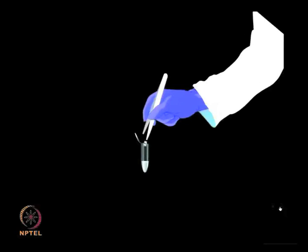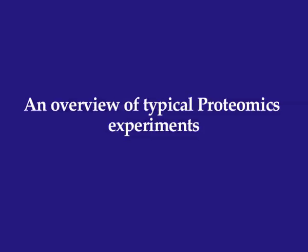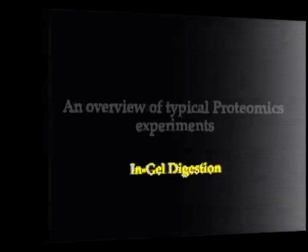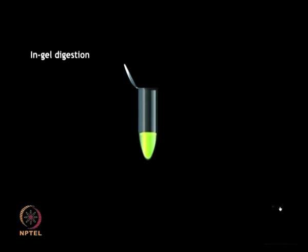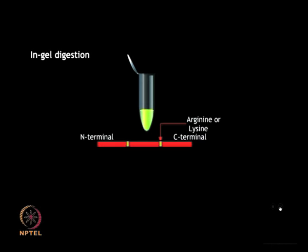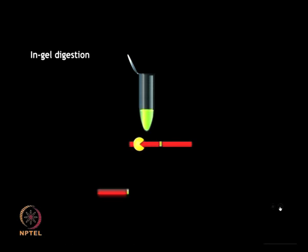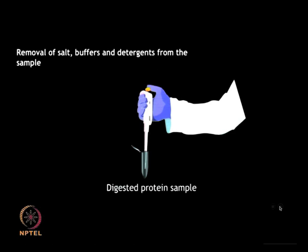The spot can be dissolved in a suitable buffer. Trypsin is then added to this mixture to carry out digestion of the protein. Trypsin cleaves the protein at the C-terminal of the arginine and lysine residues, but that is not always universal. If you have a proline present immediately after, it will hinder that cleavage, but overall the protein is digested into smaller fragments of manageable size.